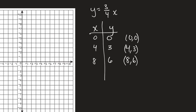Now plotting: (0, 0) is right here, (4, 3) is right here, and (8, 6) is right here. Drawing my straight line through these points — there it is. That's what you need to know about graphing proportional relationships. Thanks for watching.